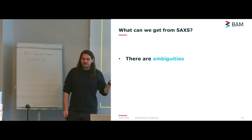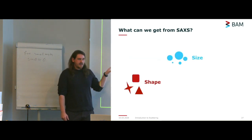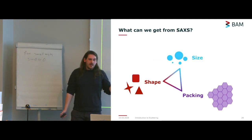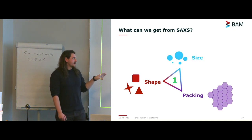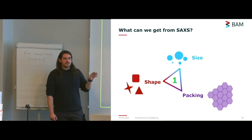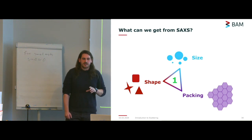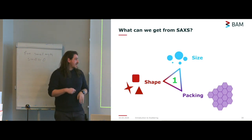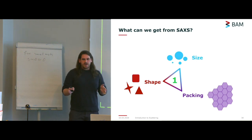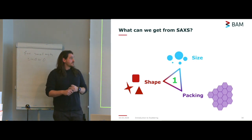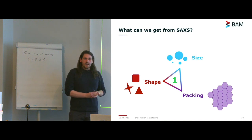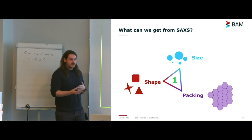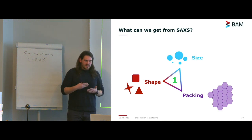What can we get from SAXS? Essentially three things: the size of your particles, the shape, and the packing. However, these things all work together in your sample, and what you can only get from SAXS is one of these things at a time. You need to make assumptions or have other data so that you can get one of these out accurately. A lot of the time you'd use microscopy to look at the shape of your particles, which is the perfect technique for that. SAXS comes in really well for looking at size distribution.